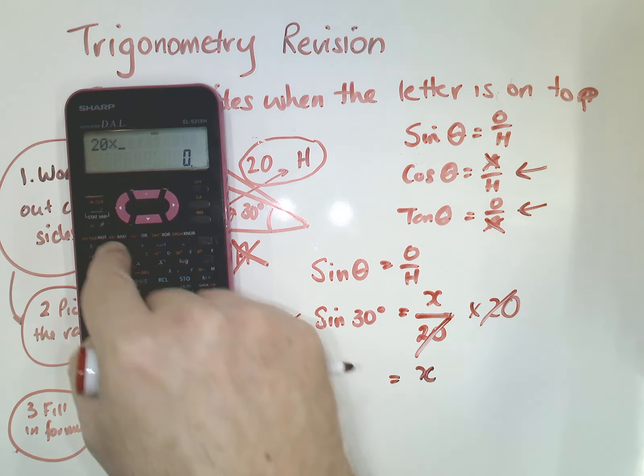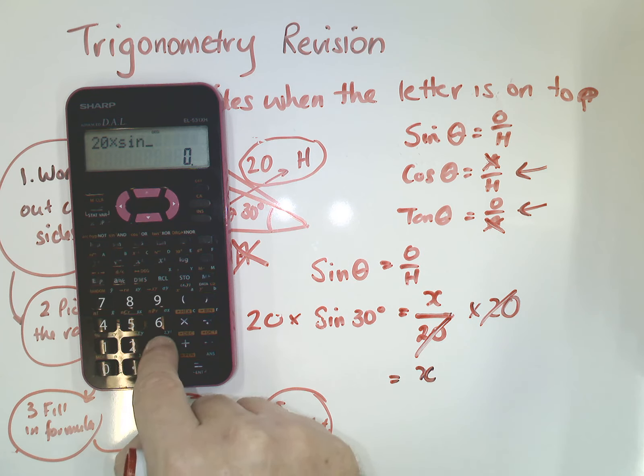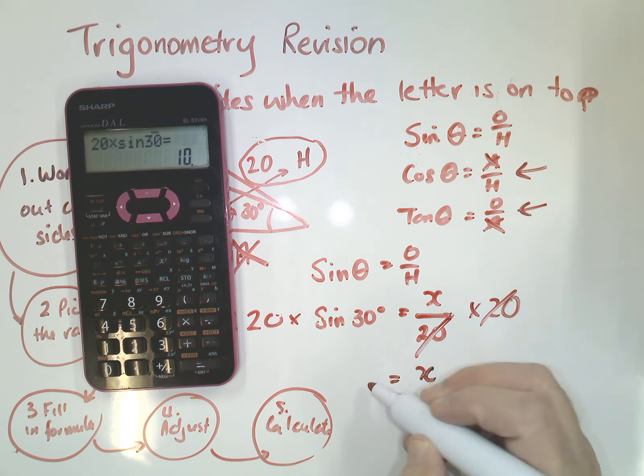So 20 times, now press sine and then 30, and my answer comes up to be 10. So I now know that that side here was 10.